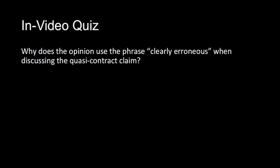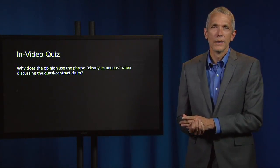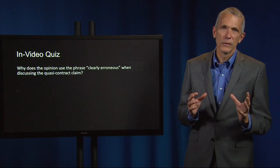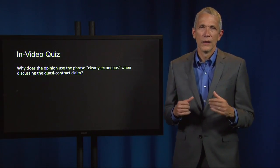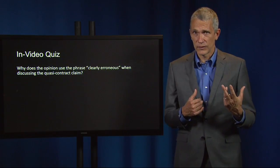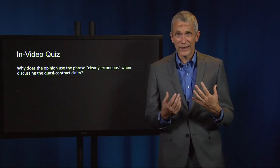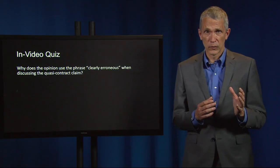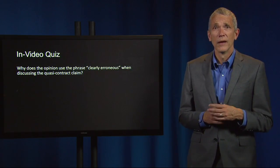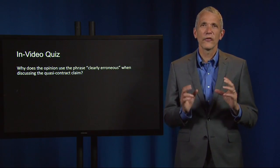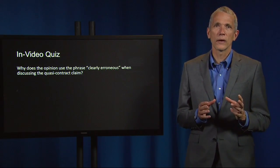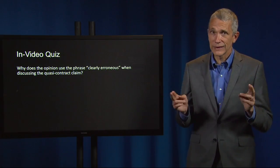Why does the opinion use the phrase 'clearly erroneous' when discussing the quasi-contract claim? This is a standard of review for factual issues—the clearly erroneous standard of review—which is in contrast and distinct from the de novo standard for reviewing questions of law. An appellate court should only set aside a factual finding of a trial court if that finding is clearly erroneous.